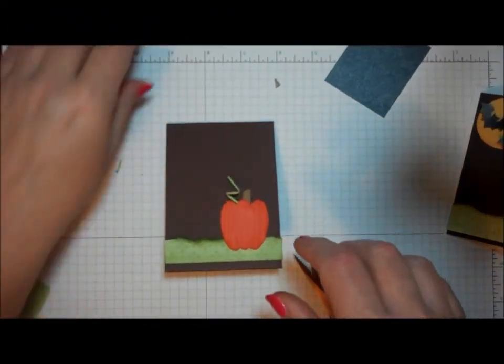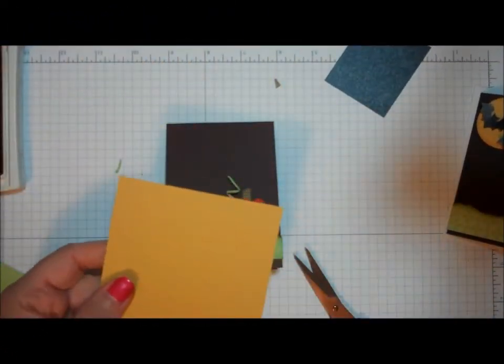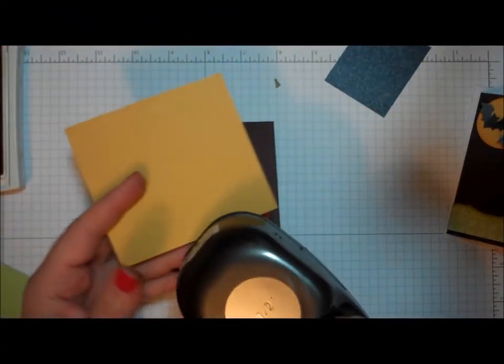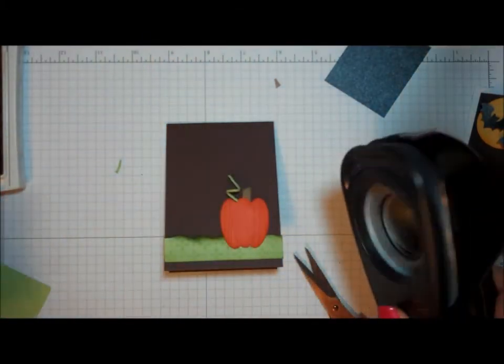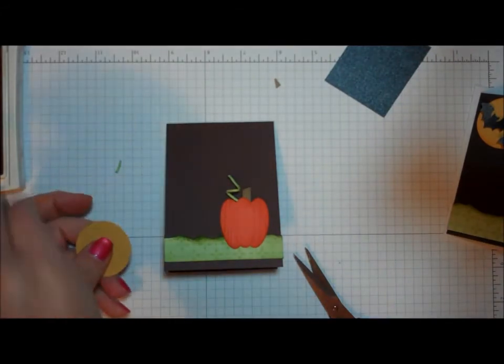So then what I did was I took my yellow scrap of paper that I had, and I took a one-and-a-half-inch circle punch, and I just punched out a circle. Set the rest of that yellow paper aside because I'm going to need it.